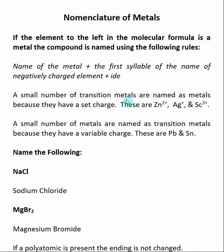You need to remember there's a couple of exceptions to this rule. A small number of transition metals are named as metals because they have a set charge. These are Zn²⁺, Ag⁺, and Sc³⁺.